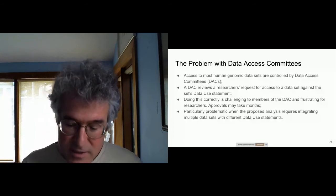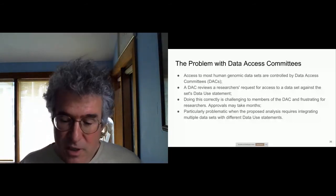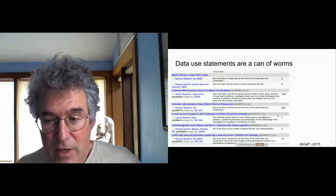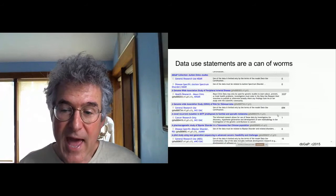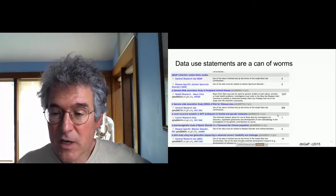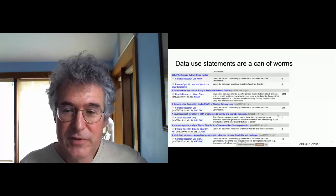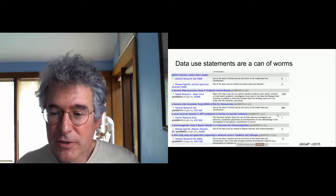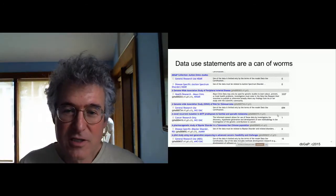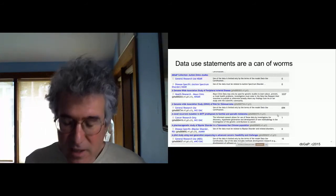Like the consents, the problem here is that data use restrictions are done ad hoc as free text. Here's the front page of dbGaP, an NCI repository of human studies, circa 2015 — it's improved since then, but not all that much — just to illustrate the differences in data restrictions.